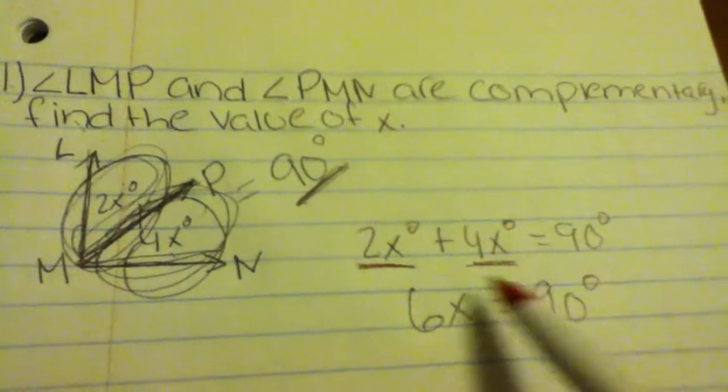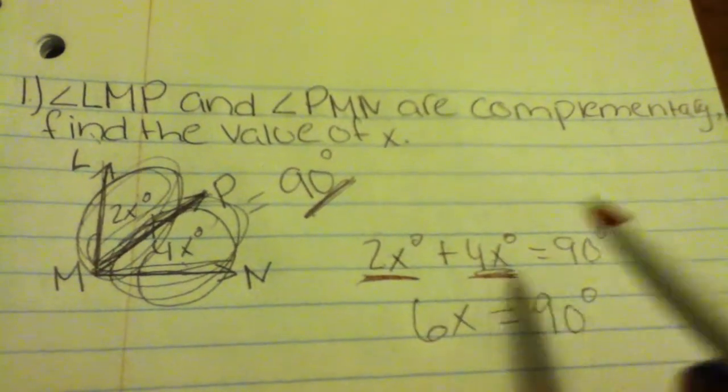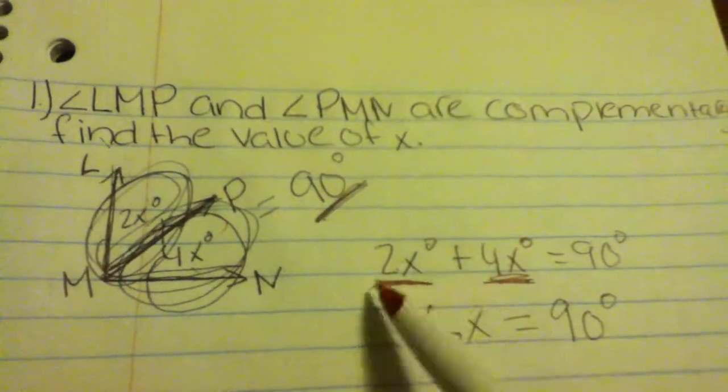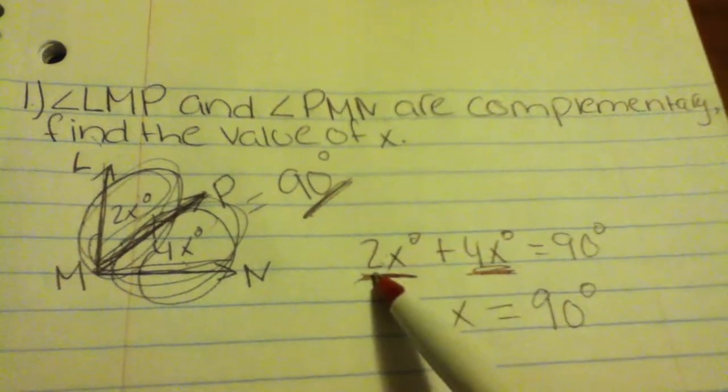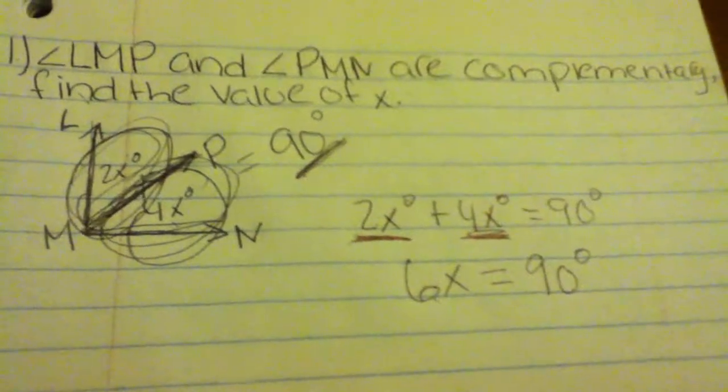The first step we do is combine like terms. Both of these have an x behind it so they are alike. So 4x plus 2x is 6x which equals 90 degrees.